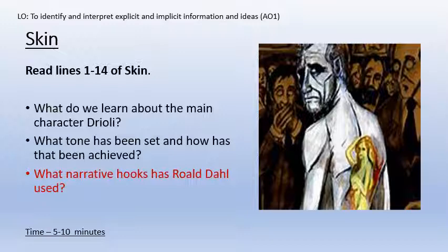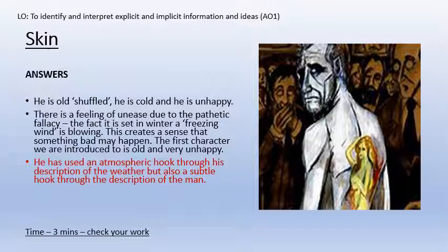That's lines one to fourteen. What do we learn about the character Drioli? Just make a bullet point list of four or five things. And what tone has been set and how has this been achieved? Which hook is that? And I think it's a mixture of two really, isn't it? Just ten minutes tops on that. And here are the answers: He is old because he shuffles. He is cold and he is unhappy. There is a feeling of unease due to the pathetic fallacy - the fact that it is set in winter and a freezing wind is blowing. This creates a sense that something bad may happen. Remember, pathetic fallacy is when the weather sets the mood of the characters. He has used an atmospheric hook through his description of the weather, but also a subtle hook through the description of the man.